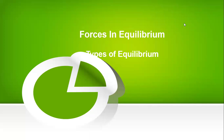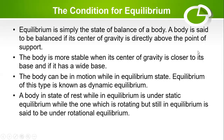Today let's move on to the types of equilibrium, but first we are going to see the condition for equilibrium. Equilibrium is simply the state of balance of a body. A body is said to be balanced if its center of gravity is directly above the point of support. The body is more stable when its center of gravity is closer to its base.